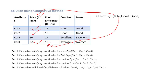For fuel efficiency with cutoff 16, values of 16 or more are selected: car 2, car 3, and car 4 are selected. For comfort, the cutoff value is good, so good, good, and good — those three are selected.